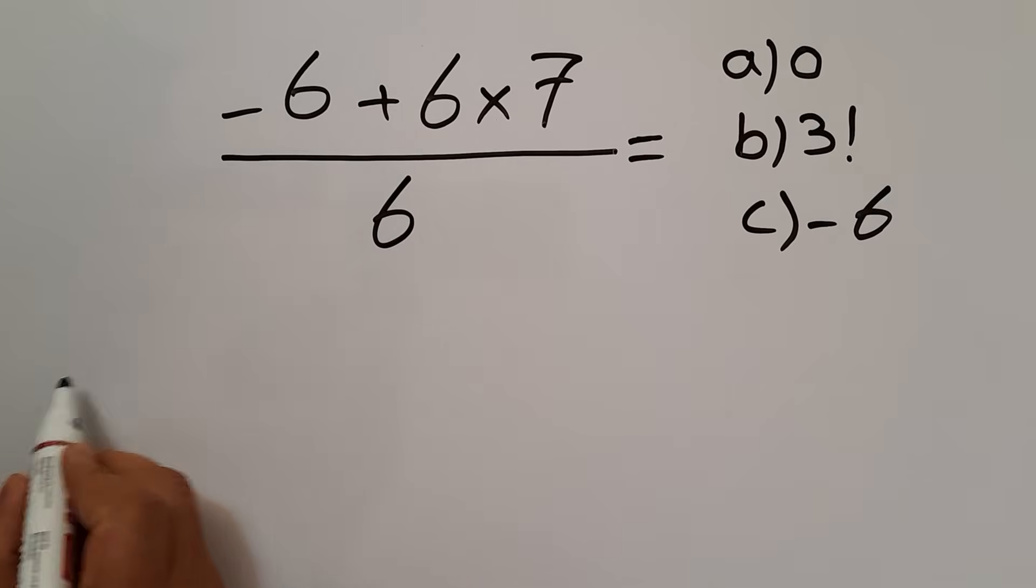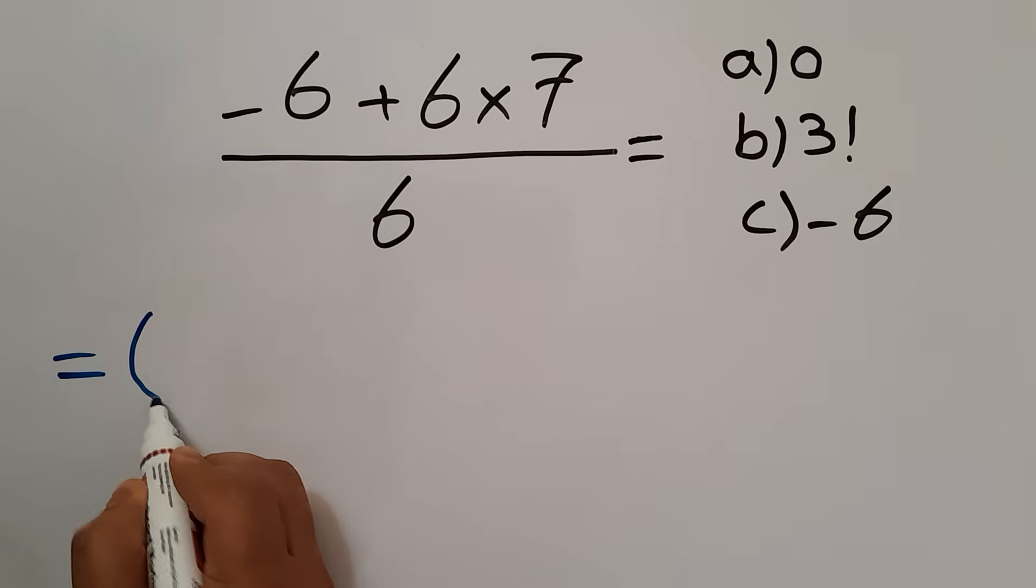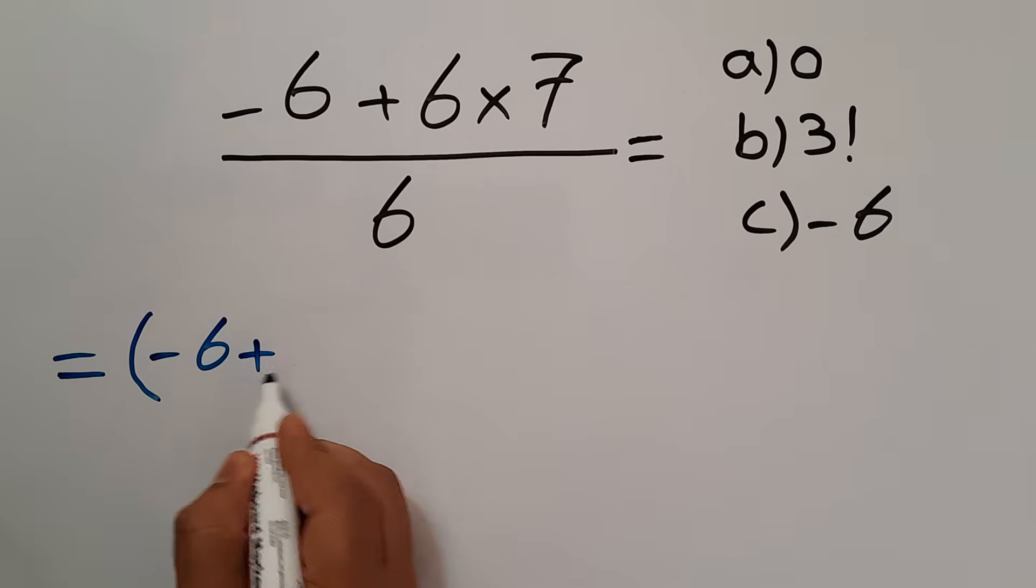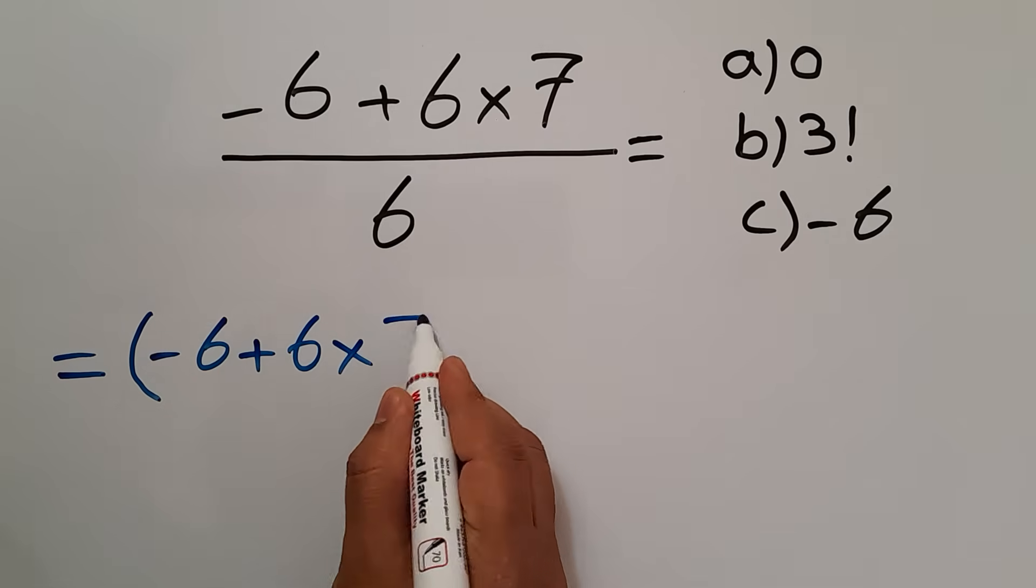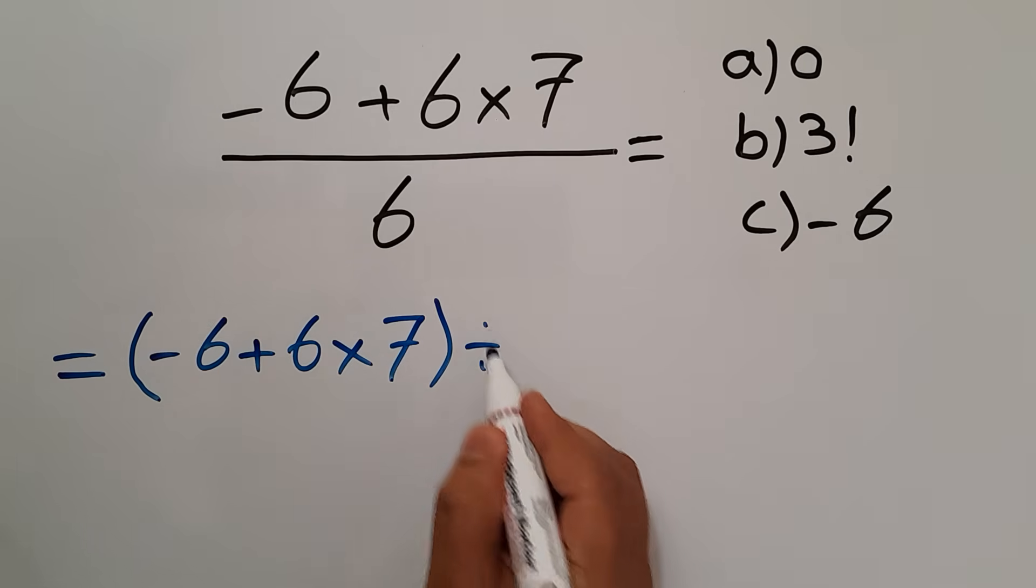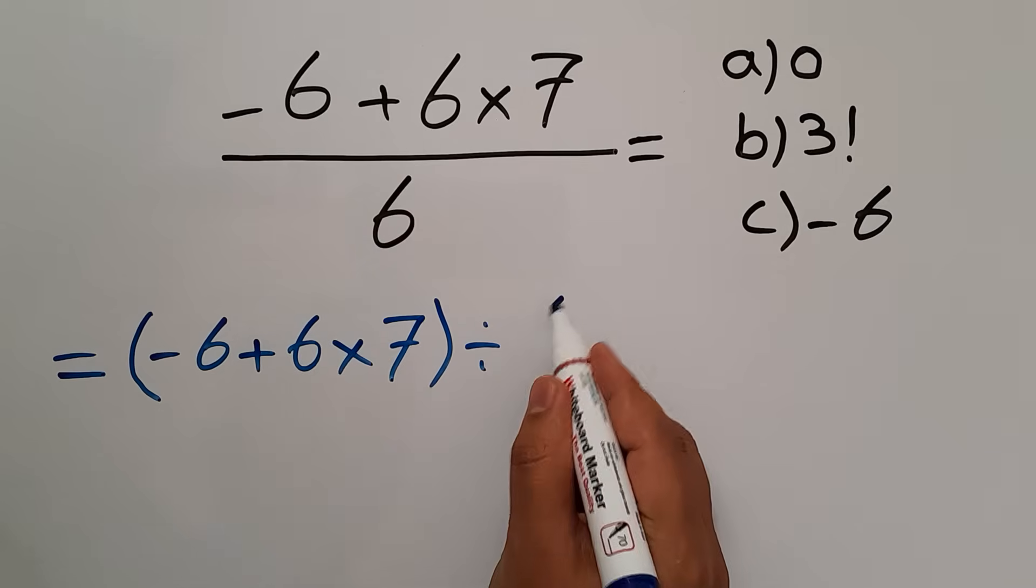Instead of this fraction, we can write parentheses, the numerator, negative 6 plus 6 times 7 divided by denominator 6.